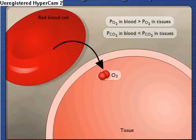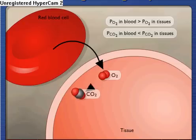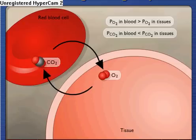Also, the PCO2 in the blood is lower than the PCO2 in the body tissues, so carbon dioxide diffuses into red blood cells there.